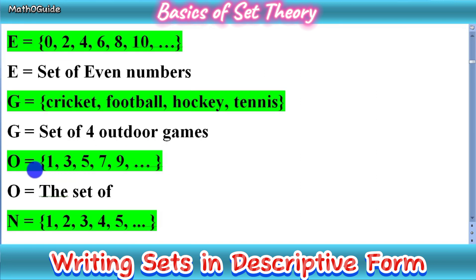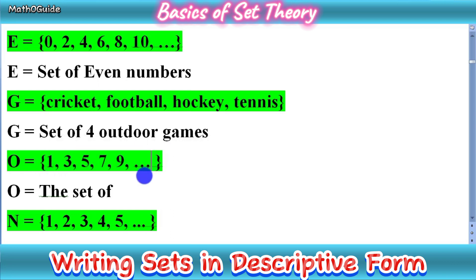Next, set O = {1, 3, 5, 7, 9, ...}. We can observe that these are odd numbers — when we divide them by 2 we get remainder 1. This is a complete set of odd numbers with no limit, so we write in descriptive form: set of odd numbers.